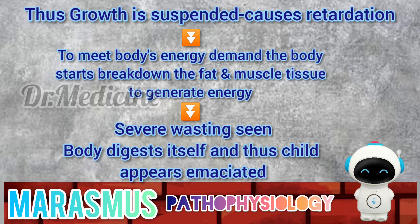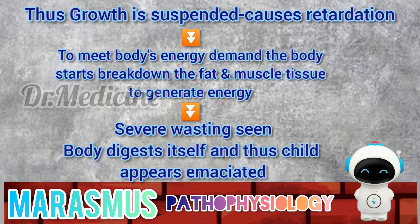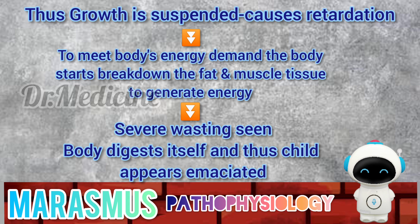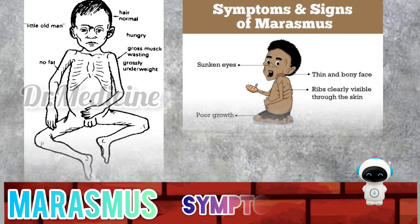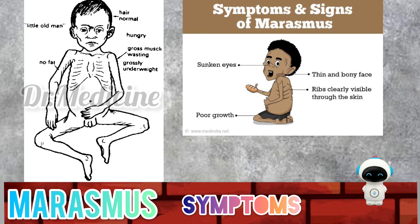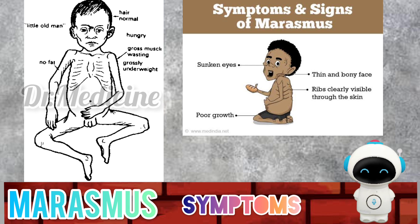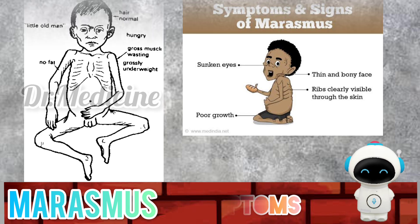As a result, there is progressive loss of fat and muscle tissue as well as depletion of electrolytes. Therefore, the child appears emaciated. The most common symptoms of marasmus include sunken eyes, thin and bony face, ribs clearly visible through the skin, and poor growth.